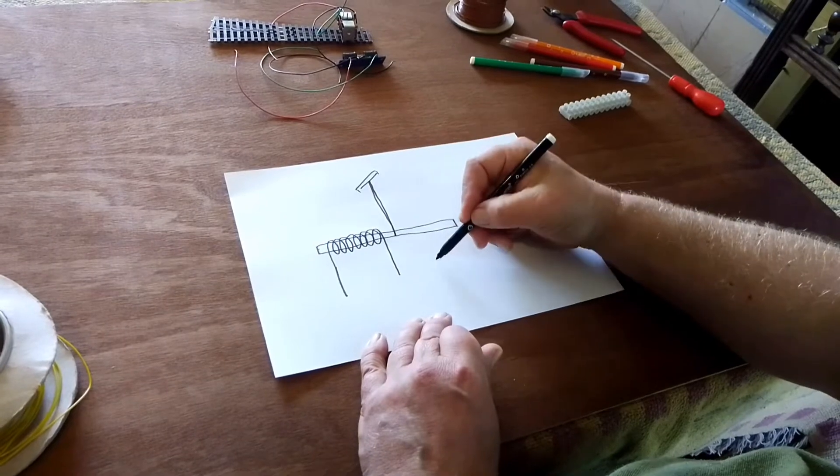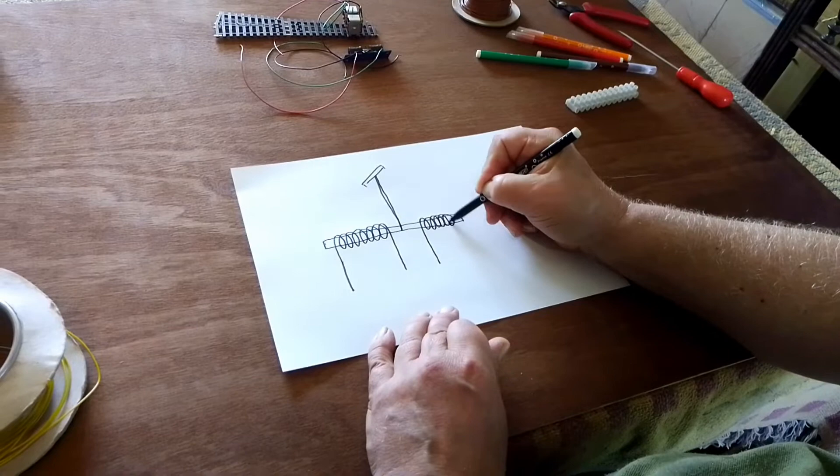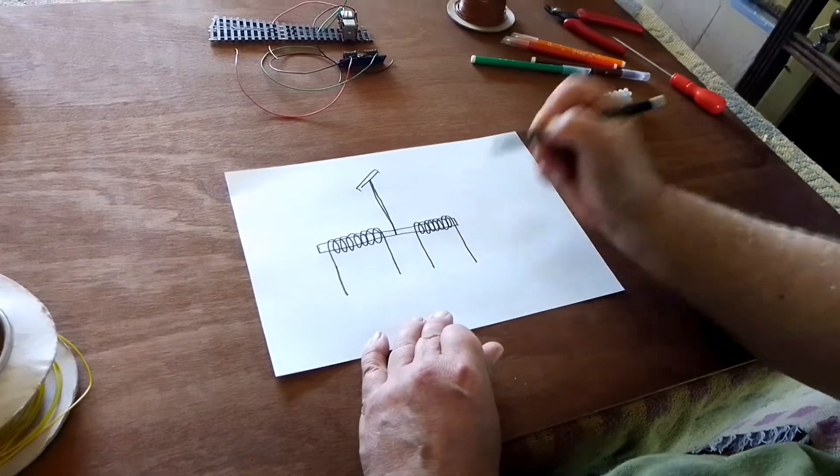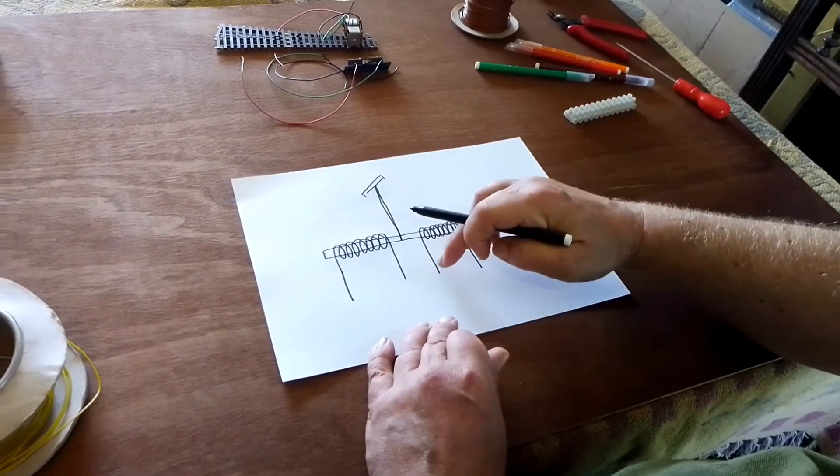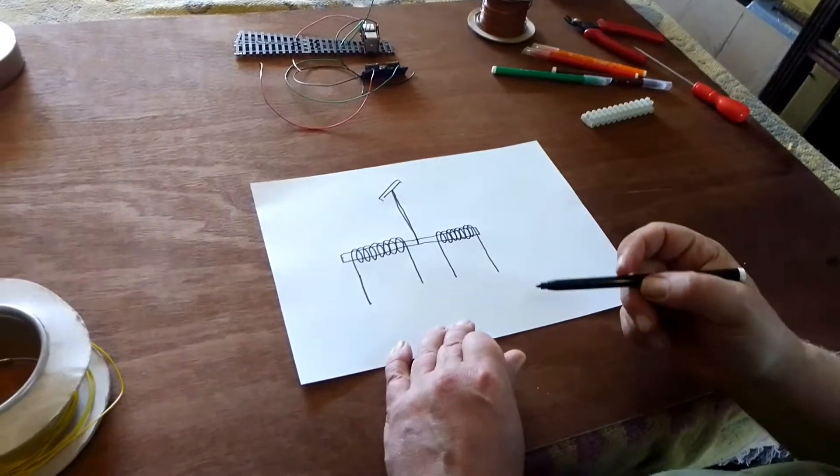On the other end of the rod surrounding it there's another coil. When the current flows through that, that will make the rod go the other way and change the point back again.